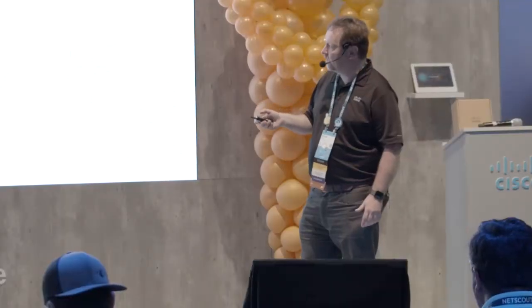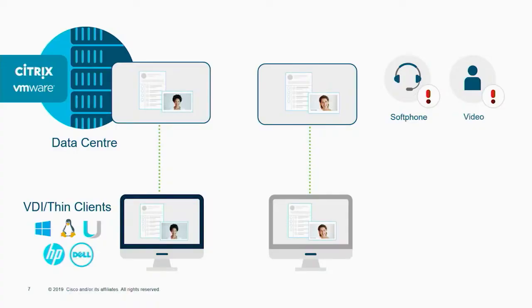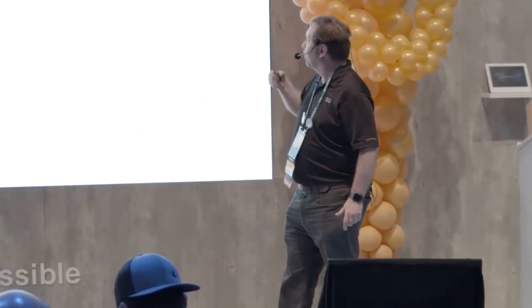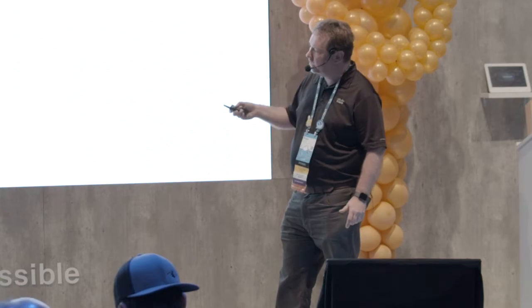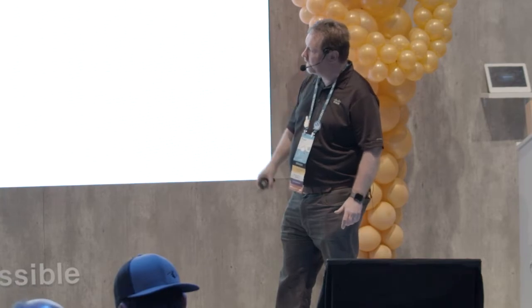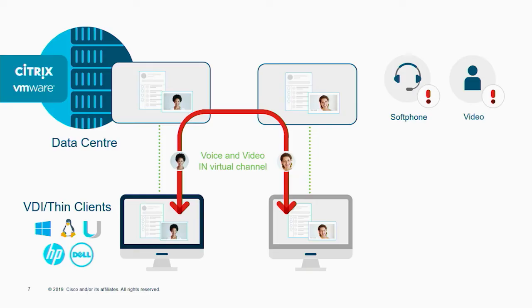Let me explain to you why that is the case. I'm going to use this model where we've got two thin clients both connecting to virtual machines up within your data center. When we want to run a soft phone or a video call, basically it means that our media is now traversing the data center.